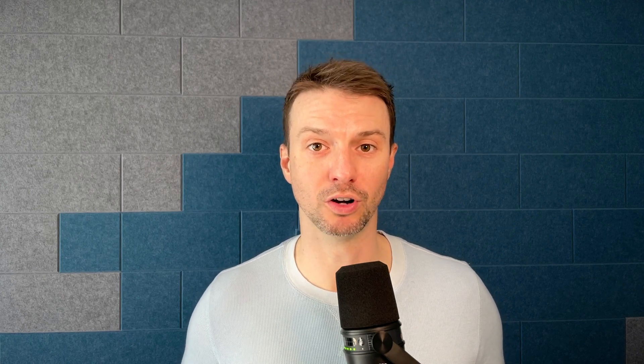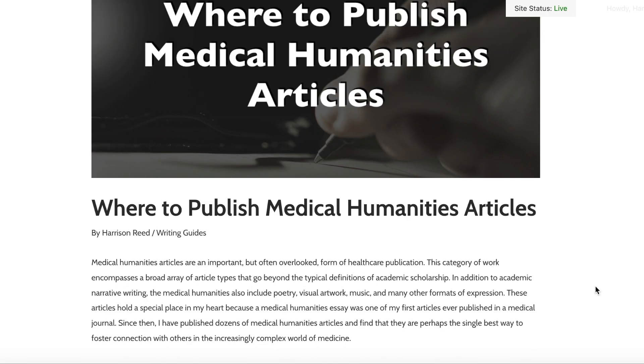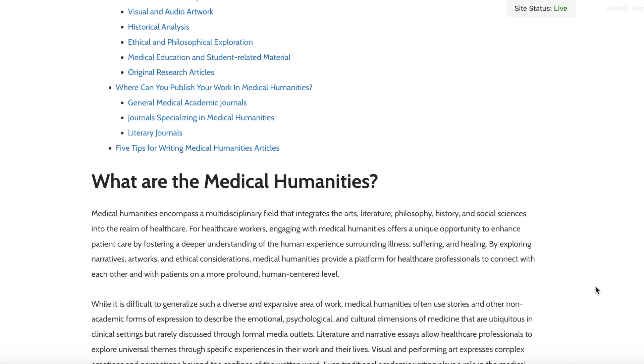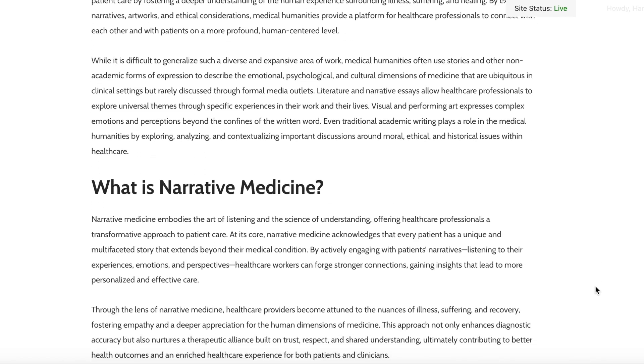So there you have it. The three places you can publish your medical humanities works are general medical journals, medical humanities journals, and literary journals. Make sure you explore all of your options before you decide where to publish your work. If you're interested in medical humanities writing, I wrote an entire article about this topic at harrisonreedwriting.com, and I'll put a link to that in the video description.